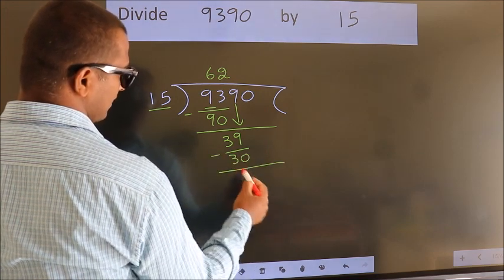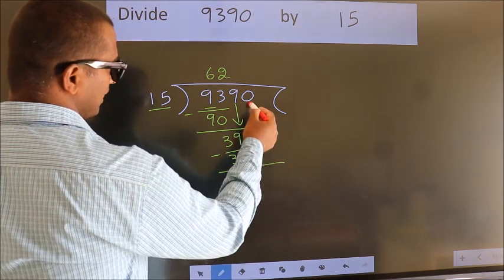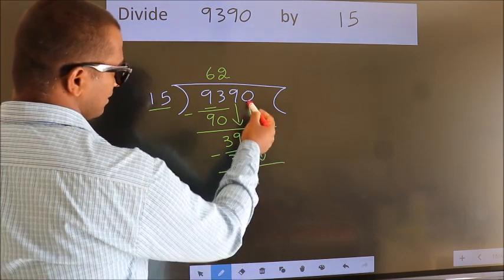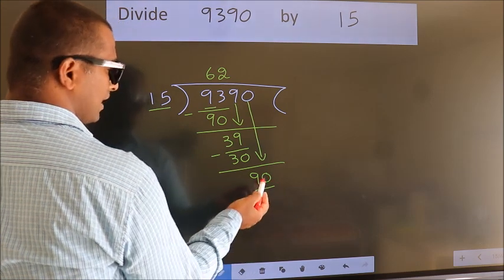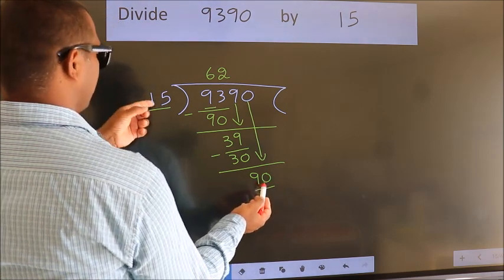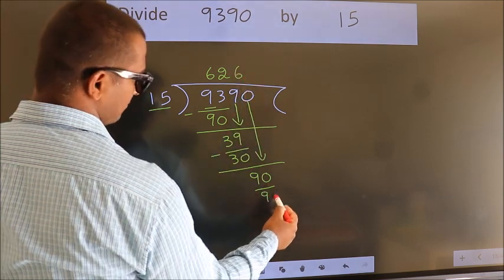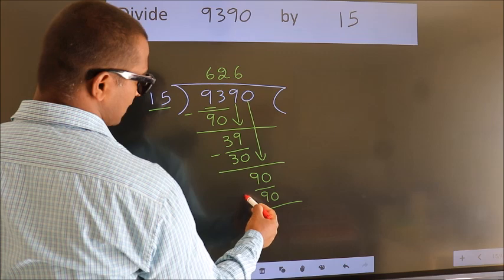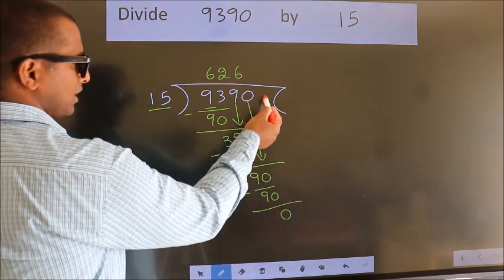Now we subtract, we get 9. After this, bring down the beside number, so 0 down, so 90. When do we get 90 in the 15 table? 15 times 6 equals 90. Now we subtract, we get 0. No more numbers to bring down.